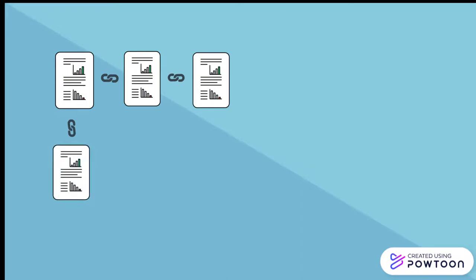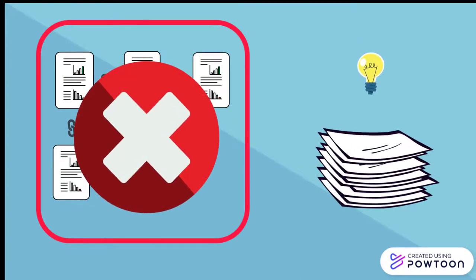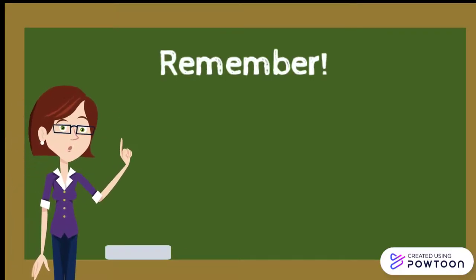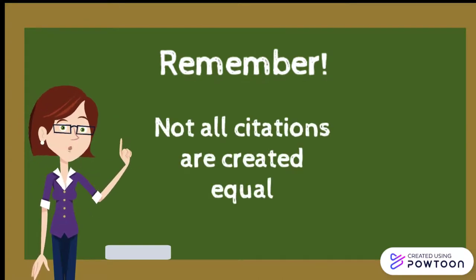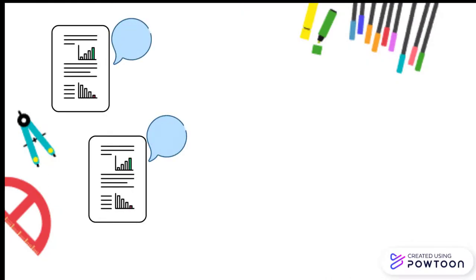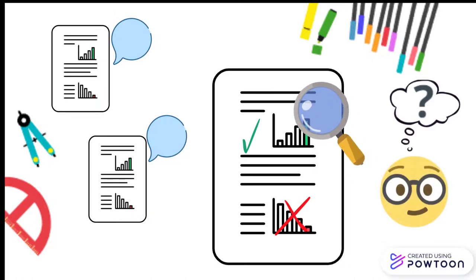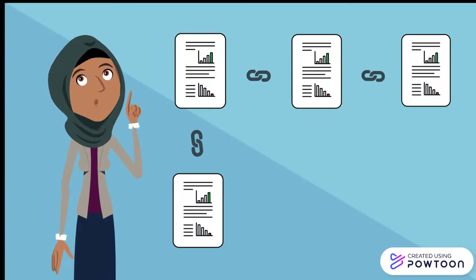Exclusively using citation chaining to locate resources can be limiting and can keep you from discovering other valuable research. Additionally, be aware that not all citations are created equal. Scholars draw on and engage with each other's work in many ways. Some resources are casually mentioned while others are explored more deeply. By simply looking at a bibliography or a citation counter you will not be able to tell which articles will be relevant to you. You will need to think critically about the resources in your chain and judge whether they are useful to you.